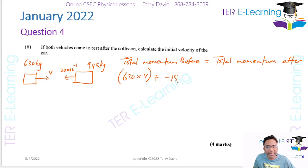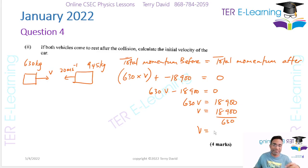So this is minus 18,900, and this here is equal to your total momentum after. Now, they said both vehicles came to rest after the collision. So if both vehicles are at rest, it means that the total momentum after the collision is zero. So this is going to be 630 V minus 18,900 is equal to zero. So 630 V is equal to 18,900. So my velocity here is going to be 18,900 divided by 630. So V is going to be 30 meters per second. So that's what I'm getting for my answer here.